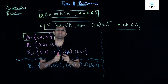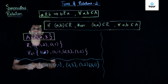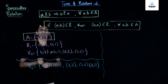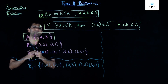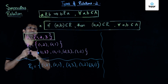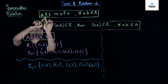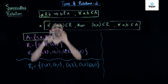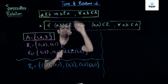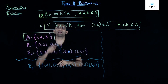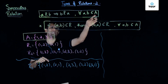Continuing our study of types of relations, the next type we will see is a symmetric relation. The condition for a relation to be symmetric is that if A is related to B, then B is related to A, for all A and B elements of a set A. Then we say that the relation R is a symmetric relation on the set A.